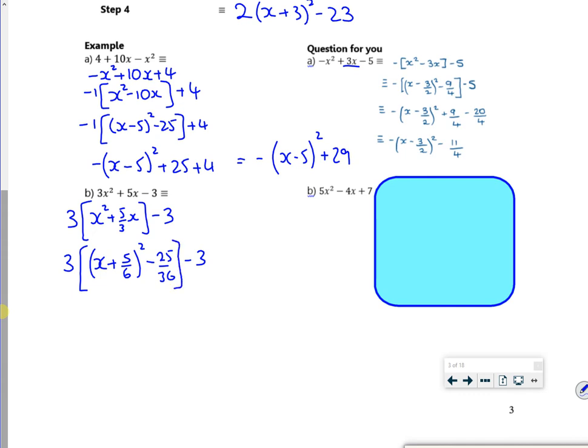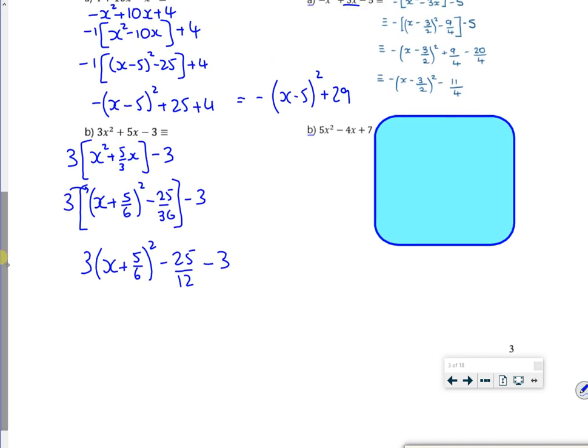But I had a 5 over 3, which became a 5 over 6. So when I square it, it becomes a minus 25 over 36. Then if I multiply 3 by the 3, then multiply the minus 25 over 36. You might want to put minus 75 over 36, but it's better to have it as minus 25 over 12. And then minus 3 there. Now then, this used to be on a non-calculator exam paper. But now we're linear. It's on calculator. So this will give us 3 lots of x plus 5 over 6 squared. I've got minus 25 over 12. Minus 36 over 12 is minus 61 over 12. I do believe that.